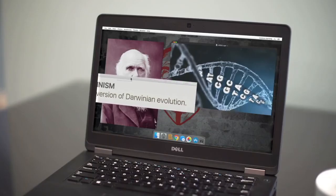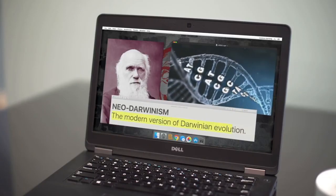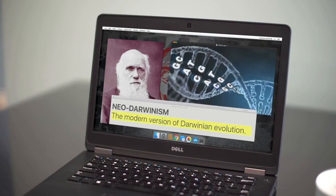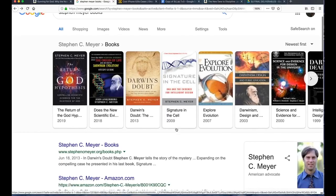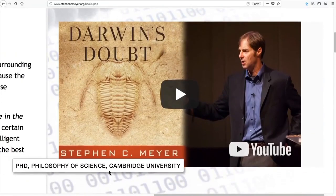Materialists think so, through neo-Darwinism—the modern version of Darwinian evolution. Stephen Meyer, author of the New York Times bestseller Darwin's Doubt, explains: